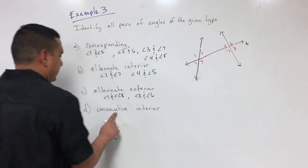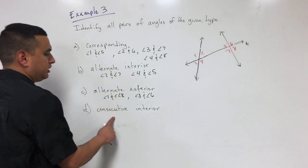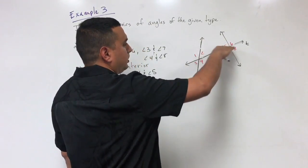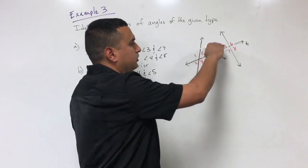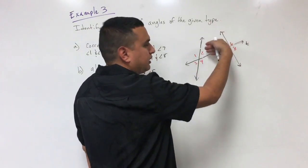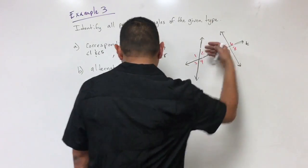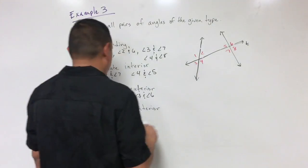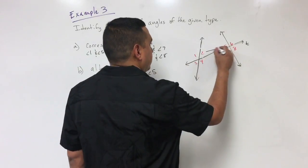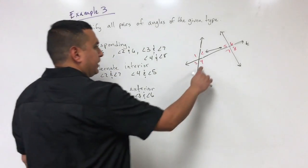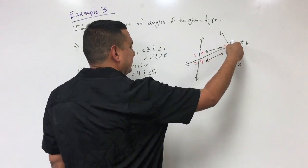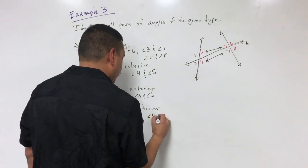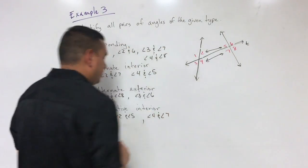Example 3d is consecutive interior angles. These are angles on the same side of the transversal — both above or both below. So angle two and angle five are consecutive interior angles — you can think of them as facing each other. Then angle four and angle seven are also consecutive interior, since they're both on the inside and on the same side of the transversal.